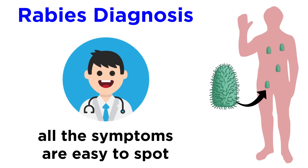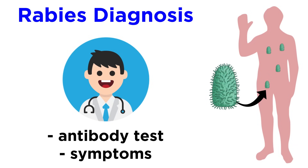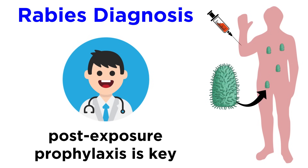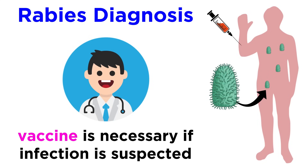When it comes to diagnosis, any of the symptoms we just discussed are typically enough. What's really unfortunate, though, is that any kind of diagnosis — either by antibody test or through symptoms — can't happen until it's too late to intervene. Post-exposure prophylaxis, meaning a vaccine administered after the moment of infection, is the only way to prevent rabies infection. That's why doctors recommend that if you have any suspicions whatsoever that you've been in contact with rabies, it's best to get the vaccine to be on the safe side.